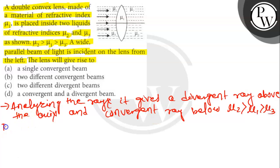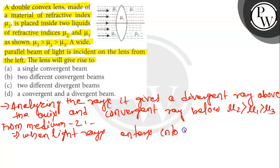So from medium 2, when light rays enter into medium 1 (mu1), the ray moves away from normal.